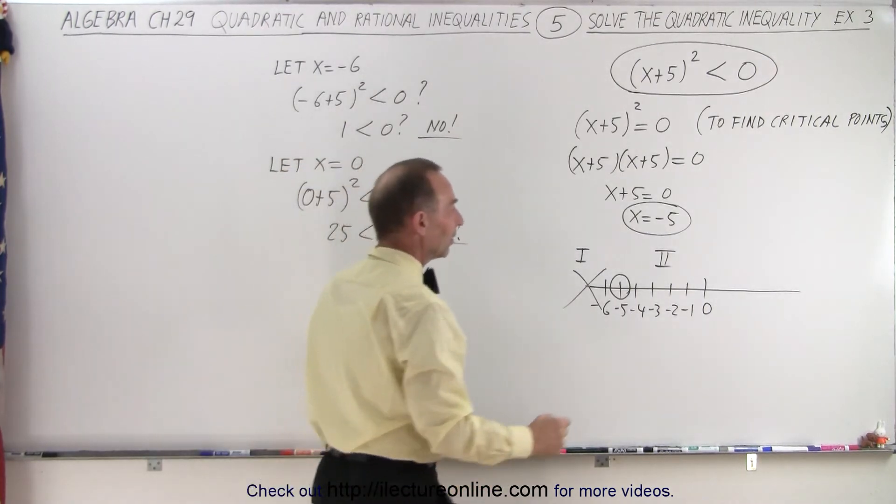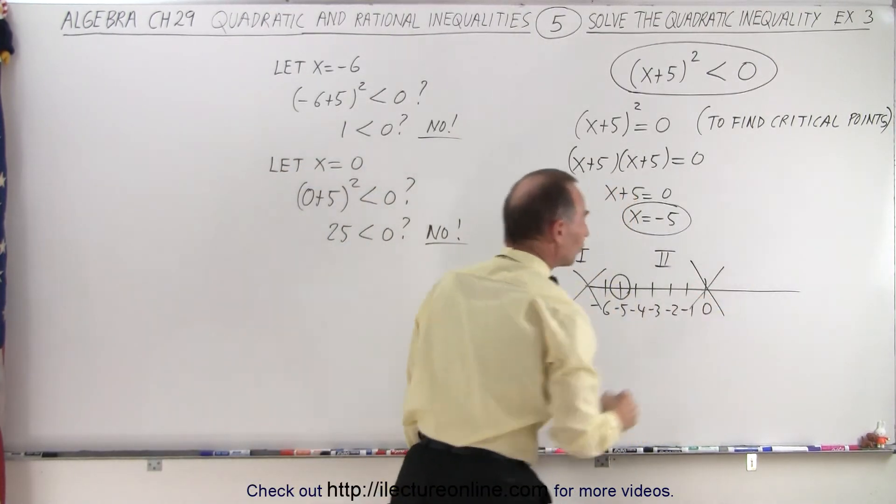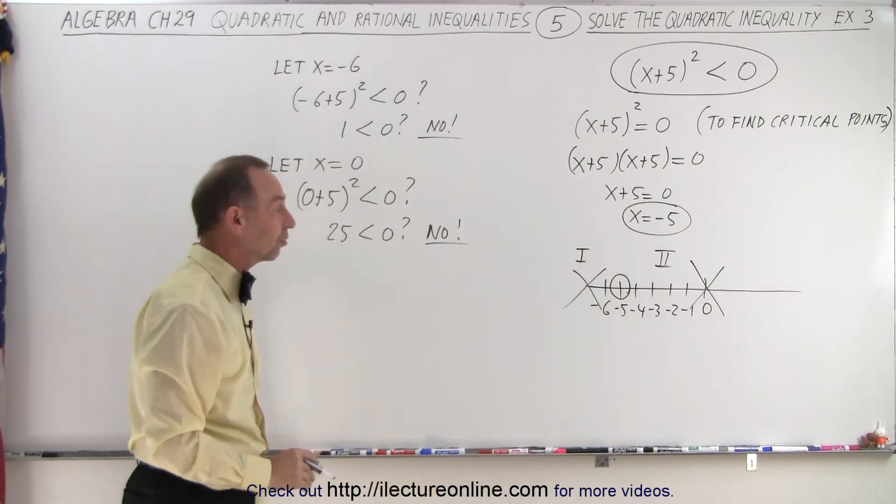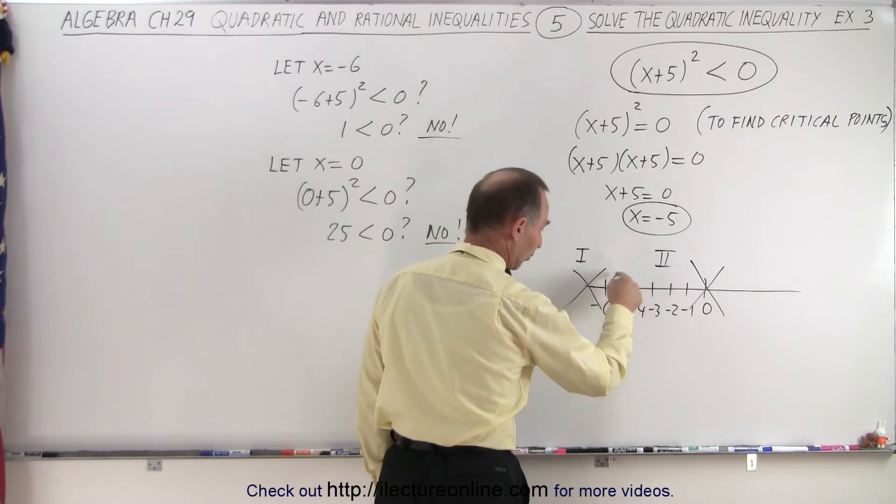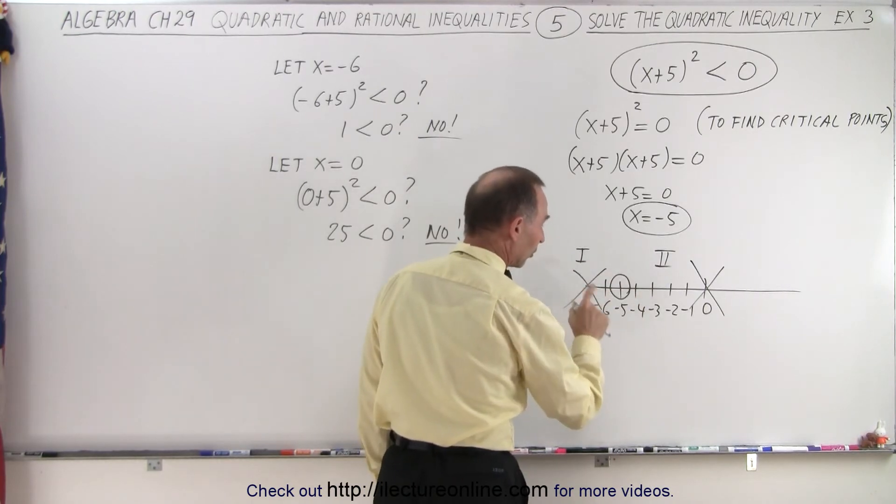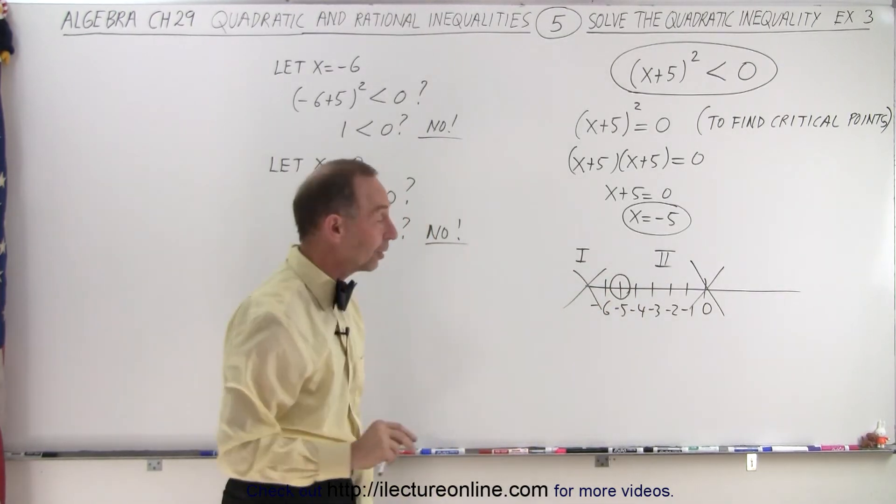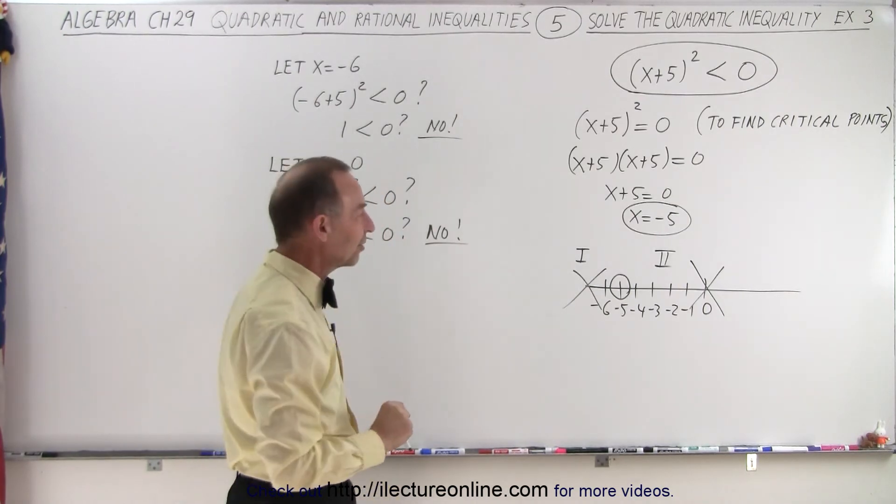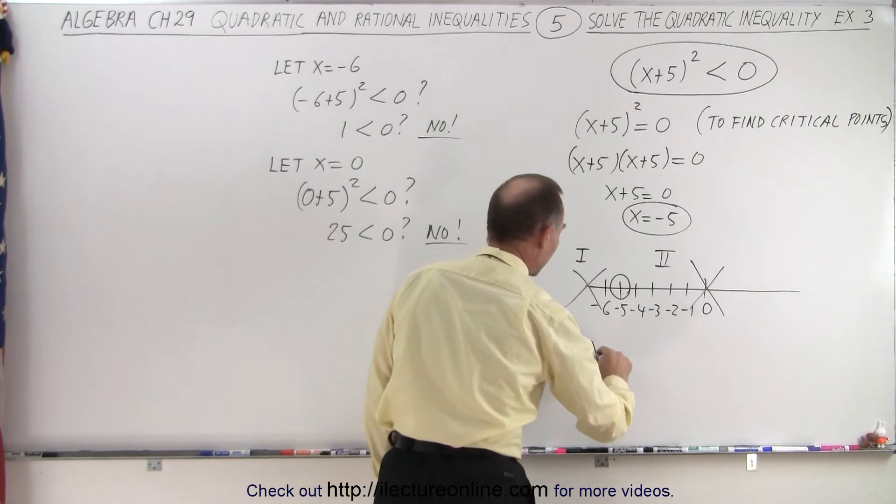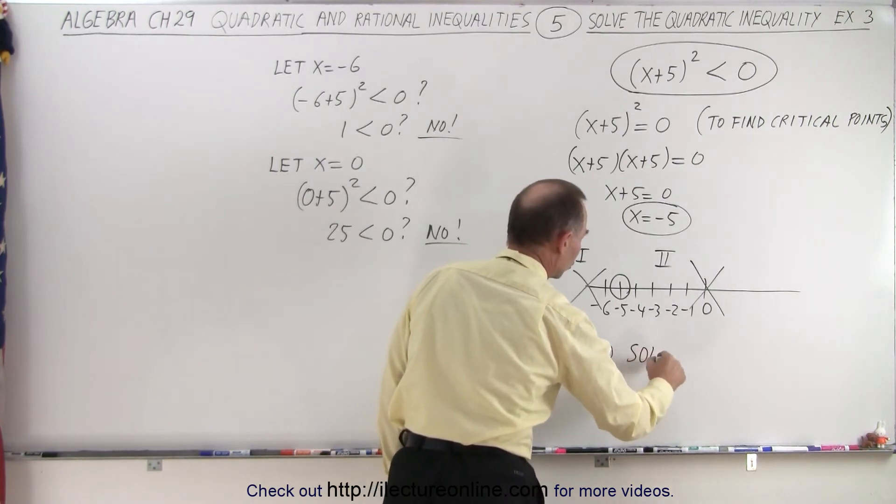Which means that the region to the right, region number 2, is also not included in the solution. And since we have an open circle around the critical point, the critical point is also not included. Meaning there's not a single point on the number line that satisfies this inequality. So therefore, we can simply say there is no solution.